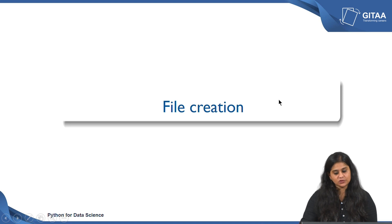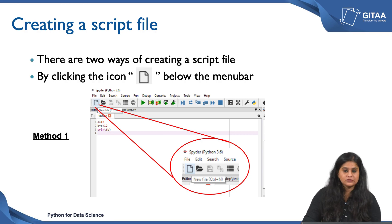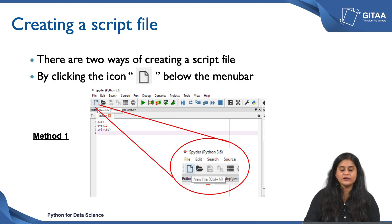Let us see how to create a file. There are two ways to go about it. The first is by clicking an icon that looks like a page folded on the right, which you can find on the toolbar. On the icon bar towards your extreme left, you will see a page that is folded on the right. If you click on that, a new script file will open. I have also shown you a zoomed-in version of the icon — the moment you click on it a new script file will pop up.